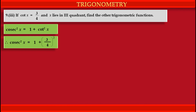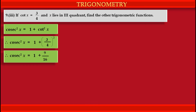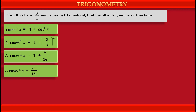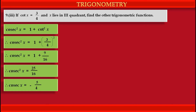Solving the bracket, we get cosec²x = 1 + 9/16. By cross multiplication on the right-hand side, we get cosec²x = (16 + 9)/16 = 25/16. Taking square root on both sides, we get cosec x = 5/4, since the square root of 25 is 5 and the square root of 16 is 4.